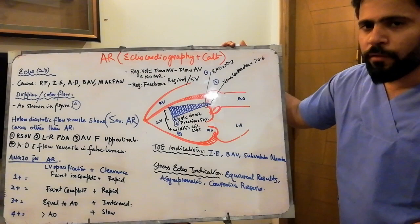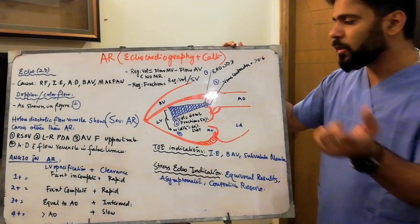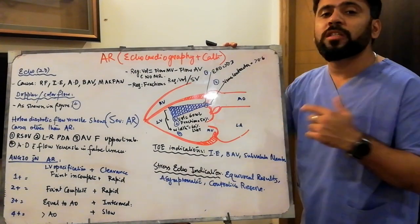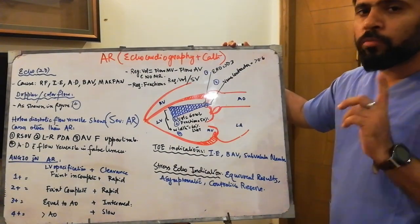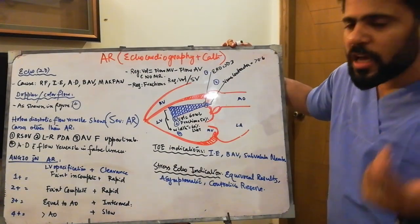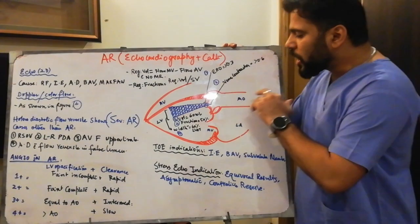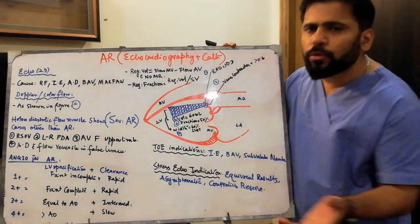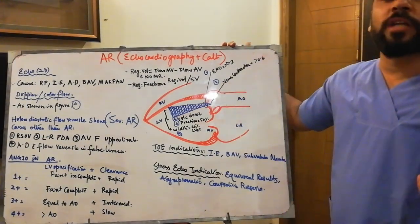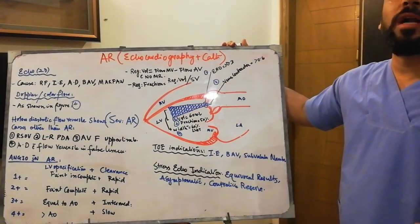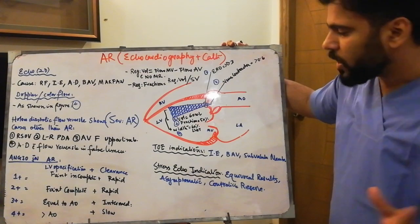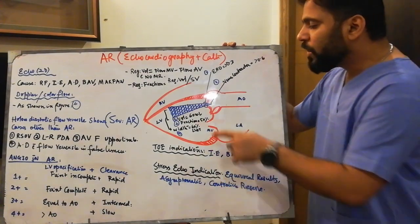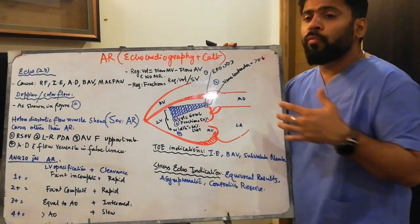The fourth parameter is regurgitant volume — how much volume is coming back to the LV. If the regurgitant volume coming back from the aorta to the LV during diastole is more than 60 ml, you label it as severe AR.